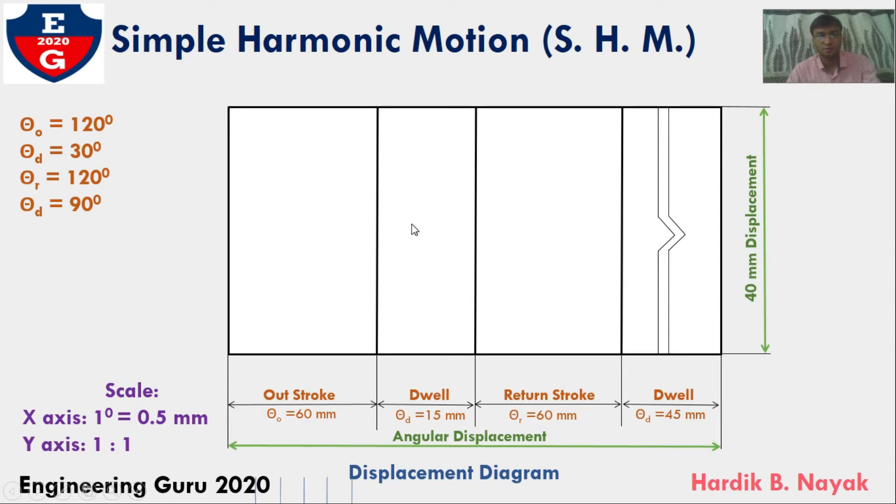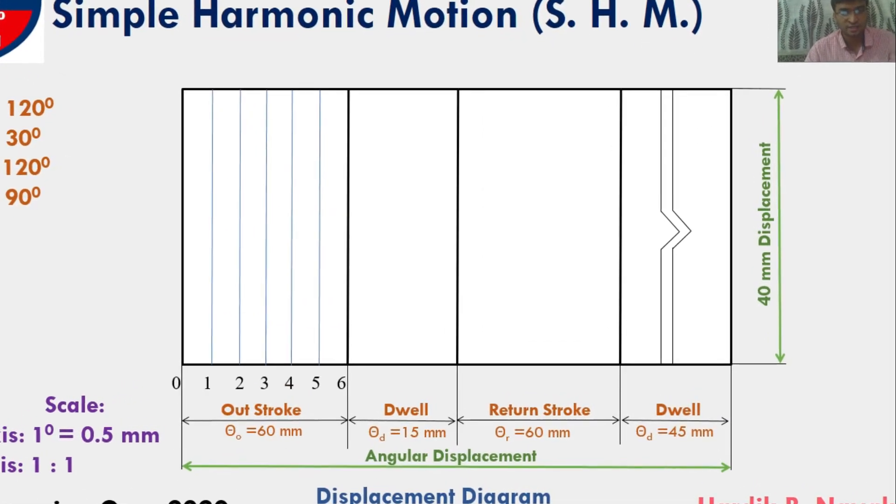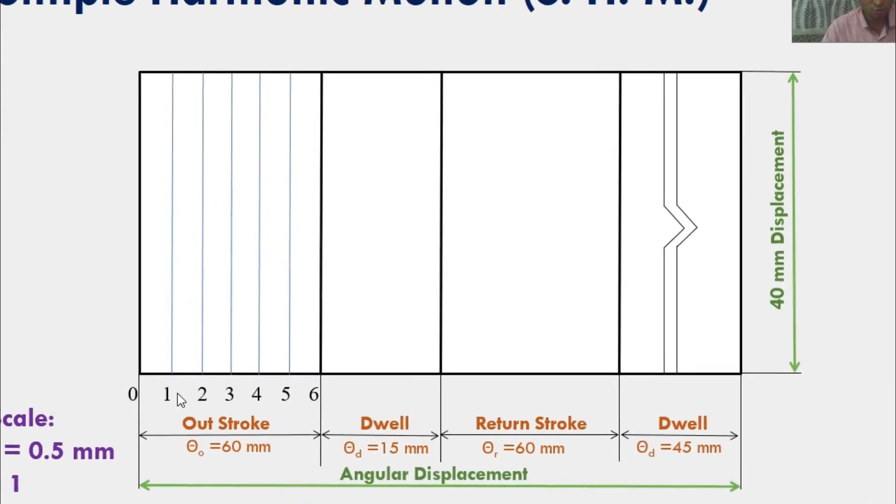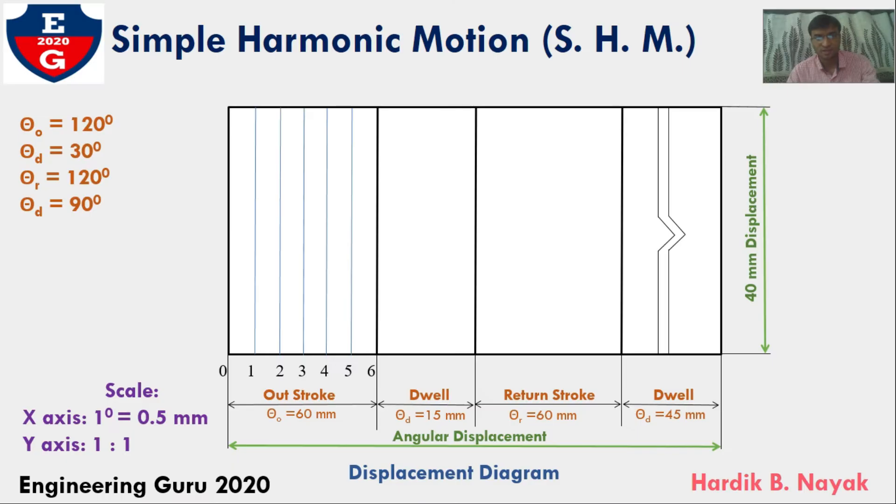I would be dividing this outstroke in 6 equal parts and draw vertical projected lines through all points, giving notation 0, 1, 2, 3, 4, 5, and 6. After outstroke, the angle turned by cam is 120 degrees, so during the outstroke, follower would be reached at maximum position.